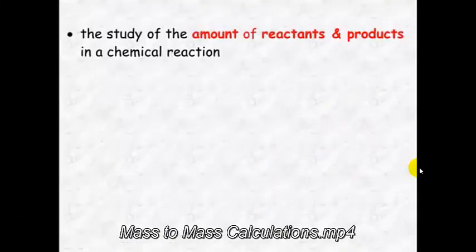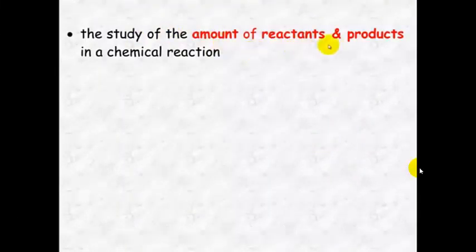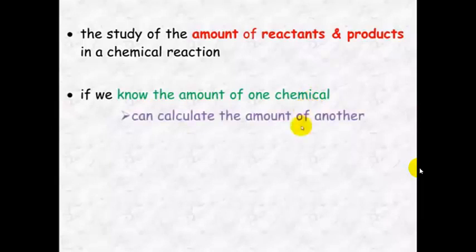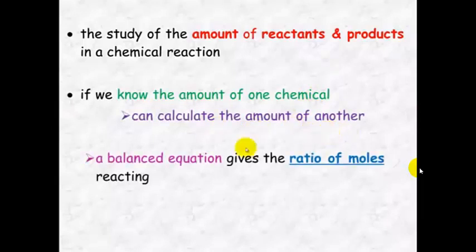Stoichiometry. It's the study of the amount of reactants and products in a chemical reaction. Basically, if we know the amount of one chemical, we can calculate the amount of another. This is using a balanced chemical equation, which gives us the ratio of moles which are reacting.